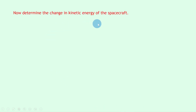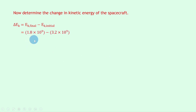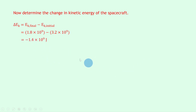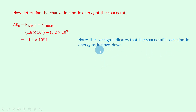Now we want to determine the change in kinetic energy: ΔEK = EK_final − EK_initial. Plugging in: 1.8×10⁹ − 3.2×10⁹ gives −1.4×10⁹ joules. Again, the negative sign indicates the spacecraft loses kinetic energy as it slows down, which makes sense. To find the change in temperature we use the specific heat capacity equation, taking the magnitude of this change in energy.